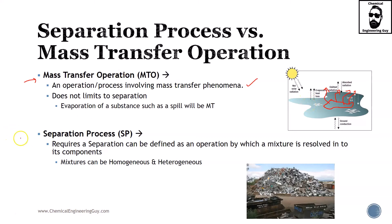Now, a separation process requires the separation of a mixture. It can be defined as an operation by which a mixture is resolved into its components. Both homogeneous and heterogeneous phases are possible. Importantly, for a separation to exist, you need at least two components, whereas for a mass transfer operation, you only require one component.